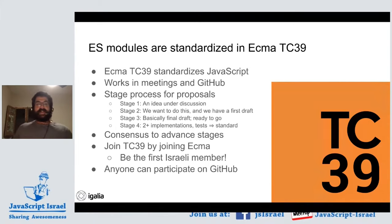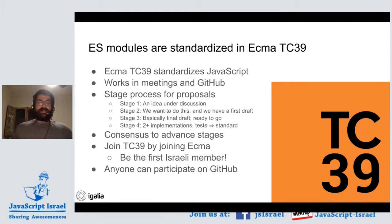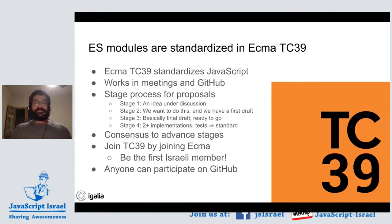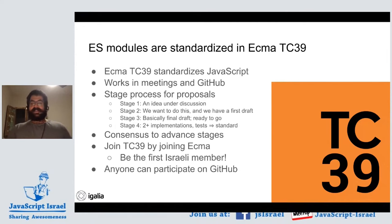Proposals in TC39 advance by consensus — the committee agrees on a proposal meeting the requirements for the next stage and being something we want to add to JavaScript. You can join TC39 by joining ECMA. We unfortunately don't have any member organizations from Israeli companies or organizations, and it would be great to get more involvement there. But whether you're a member or not, everyone can participate on GitHub.